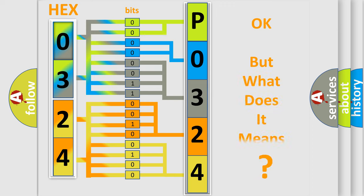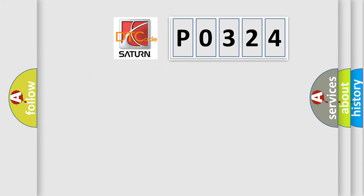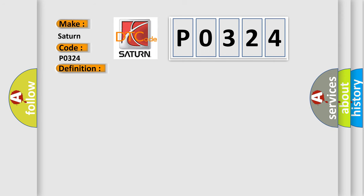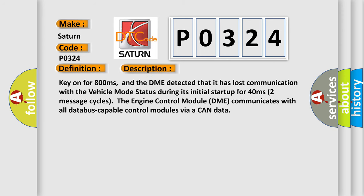We now know how the diagnostic tool translates received information into a more comprehensible format. The number itself does not make sense if we cannot assign meaning to what it actually expresses. So, what does the Diagnostic Trouble Code P0324 interpret specifically for Saturn car manufacturers? The basic definition is: Lost communication with vehicle mode status check. Key on for 800 milliseconds, and the DME detected that it has lost communication with the vehicle mode status during its initial startup for 40 milliseconds.